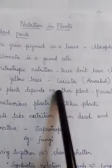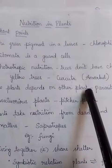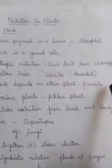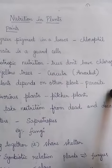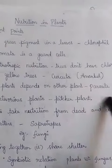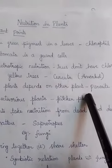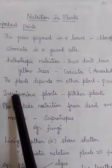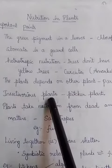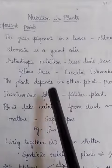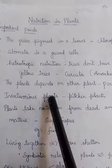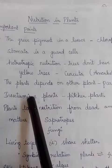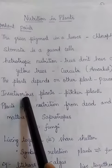Plants which depend on other plants are called parasites, and that kind of nutrition is called parasitic nutrition. Some plants take nutrition from insects — these are called insectivorous plants.